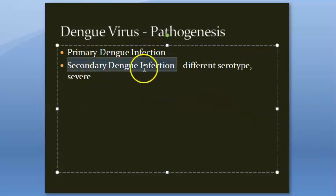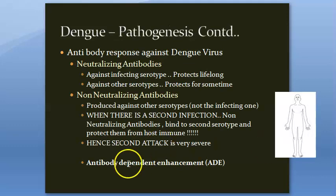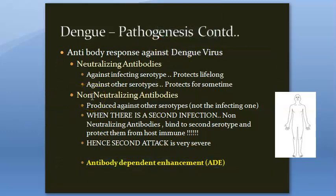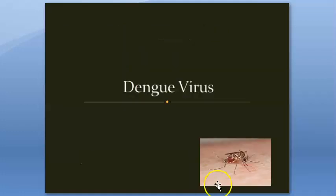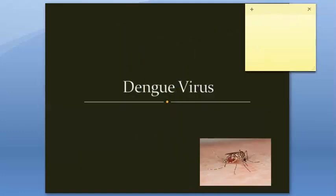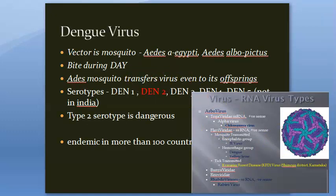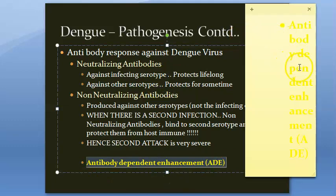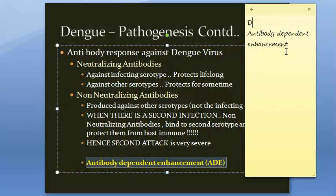Secondary dengue infection with a different serotype is very severe because of Antibody Dependent Enhancement — ADE. This is a specific term you should not forget: ADE, Antibody Dependent Enhancement, seen in dengue. This is one of the most specific concepts in dengue pathogenesis.